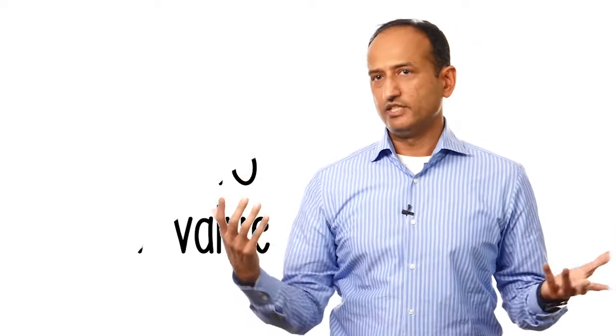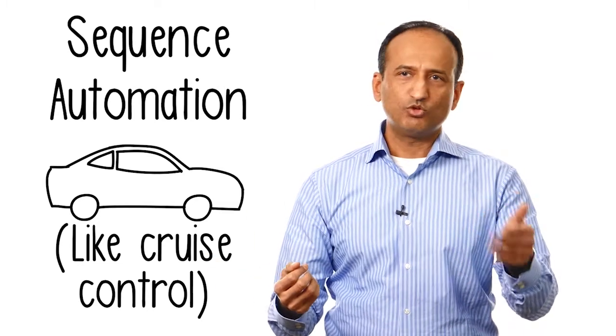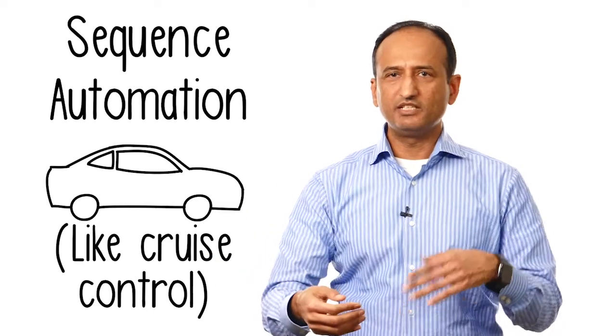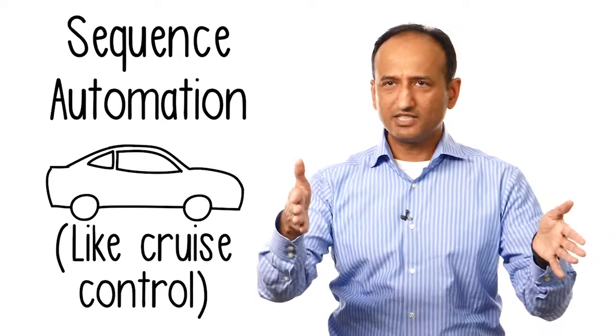And then you really transform from sequence automation, which I always refer to as that cruise control on your car. It's simple two, three things: watch the speed limit, give me the speed, don't bump into the next car, keep in the lanes. Simple steps.